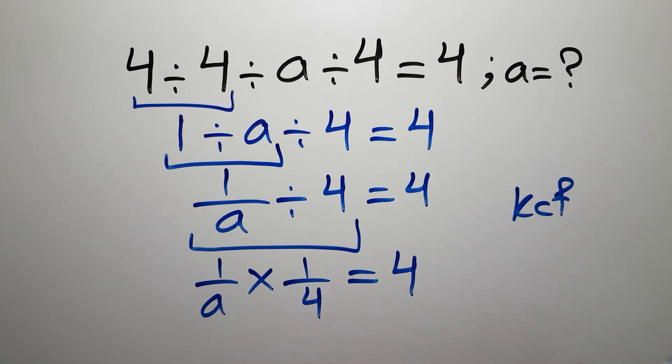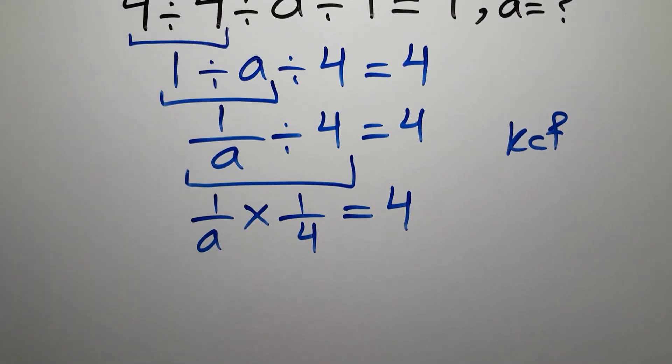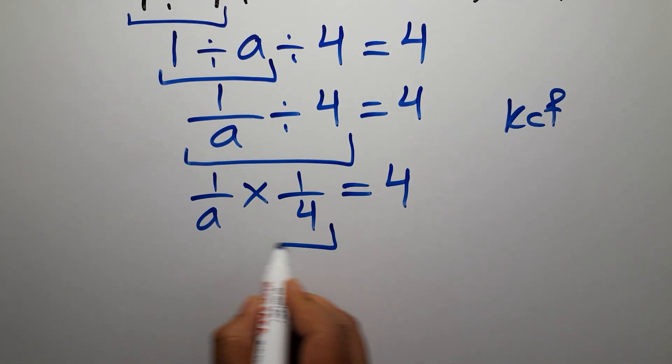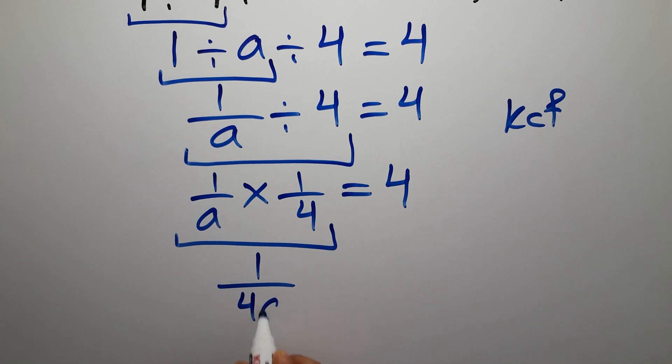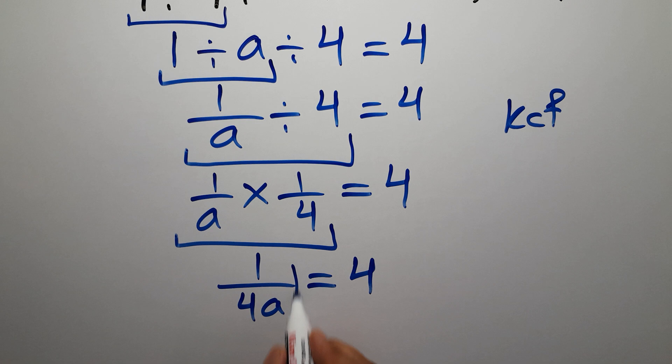Now 1 times 1 gives us 1. On the left hand side we have 1 over 4a, which equals 4. Now let's multiply both sides by a over 4.